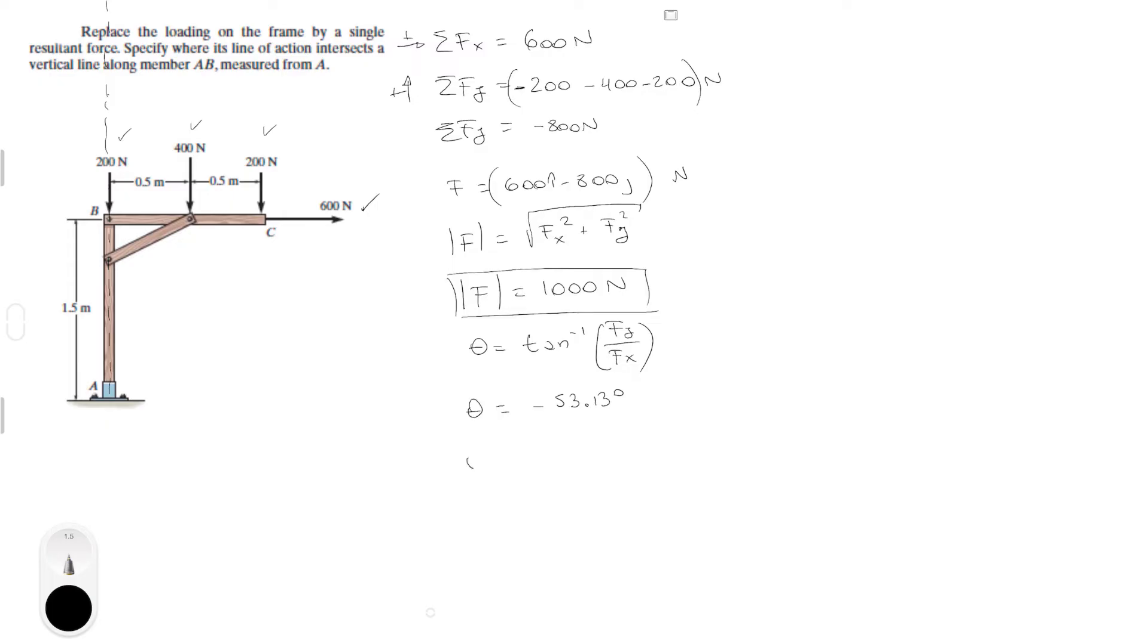But some places might require you to do positive angles only, for God knows why, 306.87 degrees. So F is equal to 1000 at an angle of 306.87 degrees.